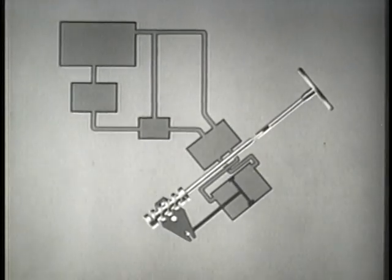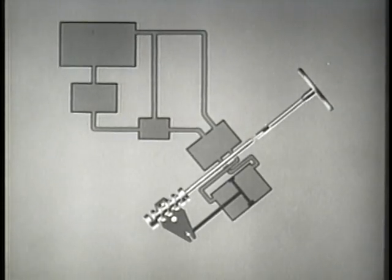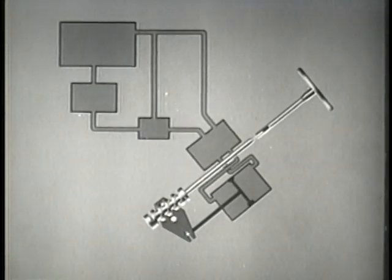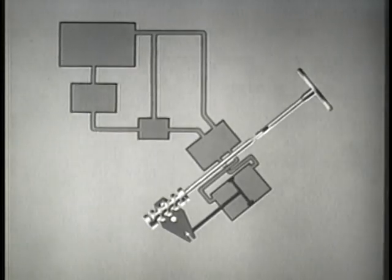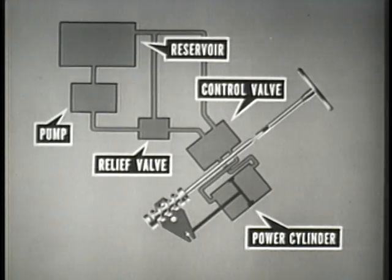To aid in illustrating the internal function of the hydraulic system, a schematic diagram will be used. The steering linkage from the pitman arm lever to the front wheels will not be shown. Let us view the five major components of the hydraulic system as they operate progressively to deliver the steering assist.